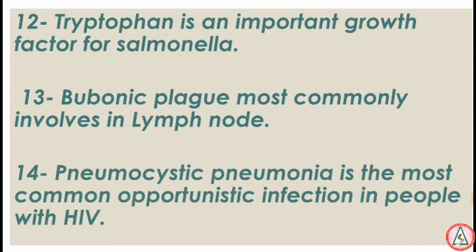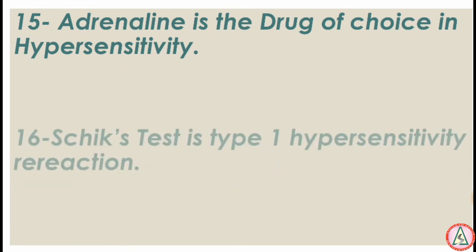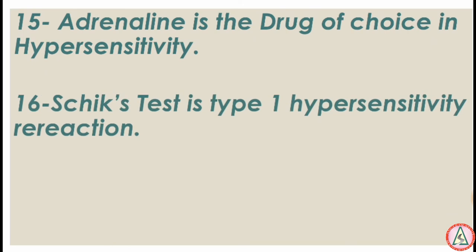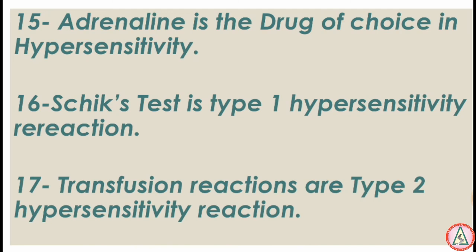Pneumocystis pneumonia is the most common opportunistic infection in people with HIV. Adrenaline is the drug of choice in hypersensitivity reactions. Schick test is a type 1 hypersensitivity reaction. Transfusion reactions are type 2 hypersensitivity reactions.